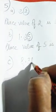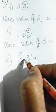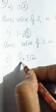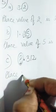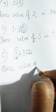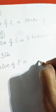Part C: 8.312 and 8 is encircled. Since 8 is before the decimal it is in the ones place, so the place value of 8 is eight ones, meaning eight. Students, the D part you will do by yourself.